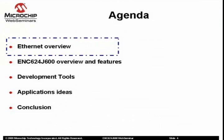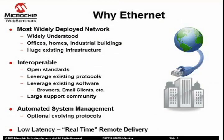First, I will briefly present an introduction and overview of Ethernet and why it is a compelling consideration for embedded applications. One major reason is that it is widely deployed. Ethernet can be found in offices, homes, and industrial buildings, used to connect devices across the desk or across the building. There is a huge existing Ethernet infrastructure already built, which means your Ethernet device can be easily added without the need to run custom cables or any special configurations.